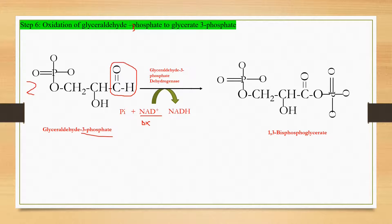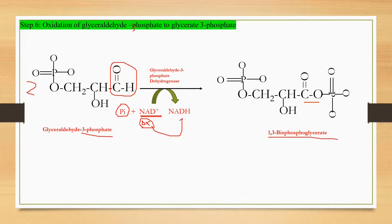Step six is called oxidation coupled with phosphorylation. The oxidizing agent is NAD+, which oxidizes the aldehyde into a carboxyl group. This is coupled by phosphorylation — an inorganic phosphate attaches to the carboxyl group, producing 1,3-bisphosphoglycerate, with phosphates on carbon number one and carbon number three. The enzyme that catalyzes this reaction is glyceraldehyde 3-phosphate dehydrogenase. The NAD+ that serves as oxidizing agent is reduced to NADH.